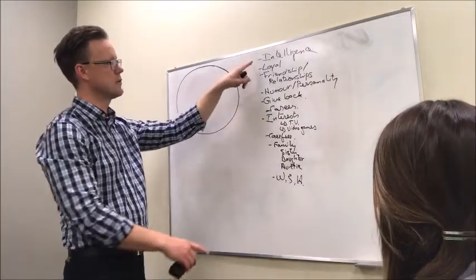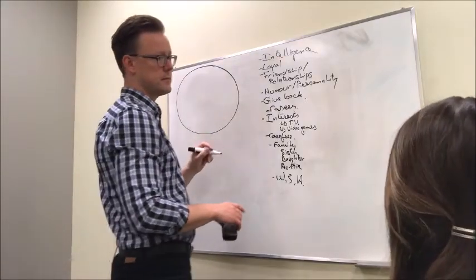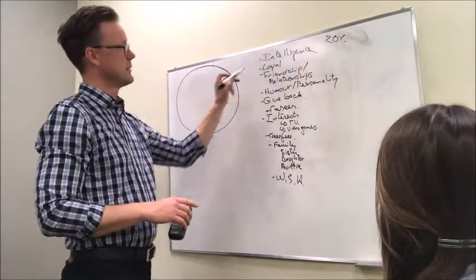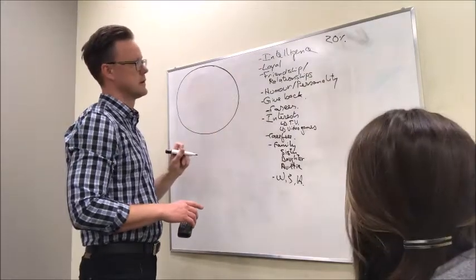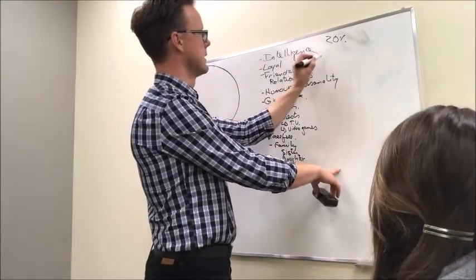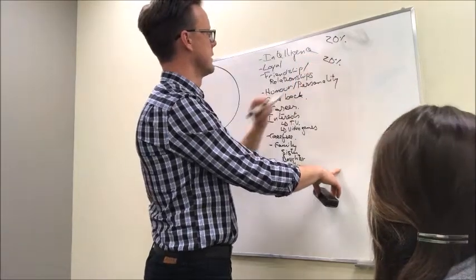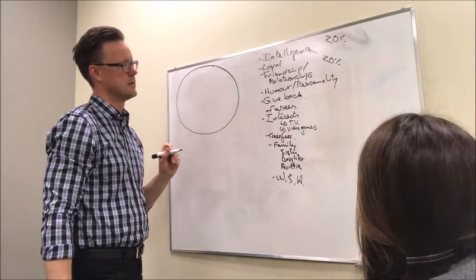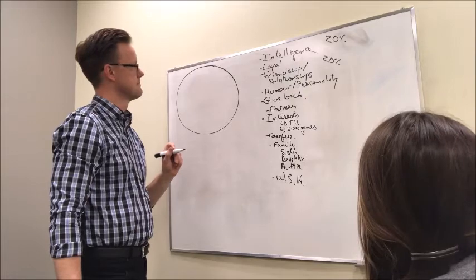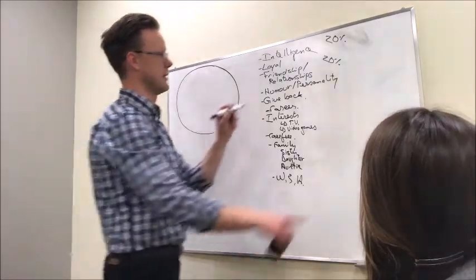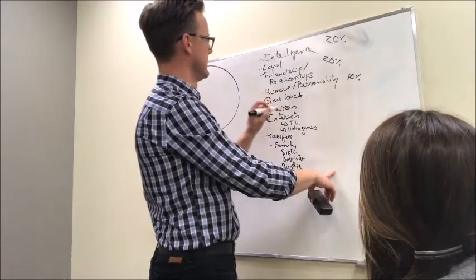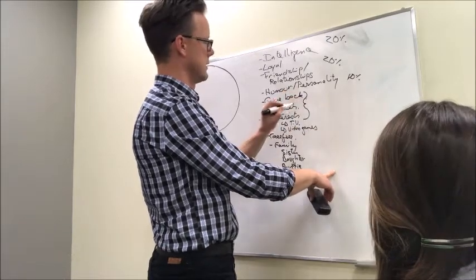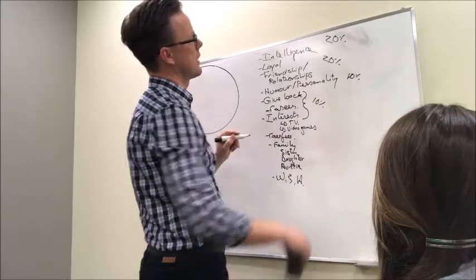But if we were to take time to start to give all of these percentages, what do you think we'd end up with here? Let's just do real quick intelligence. How important? For me, that's high. I think that's like 20%. We're going to have to use our math skills here. We only have 100. But 20 is high. So loyal. I feel like loyal, friendship, and relationship would all kind of go into one. So I do feel like that's 20. Humor and personality, probably 10. And the volunteer, career, and interests, I would put in one category. Maybe that'd be 10 as well. So we've got 60% so far.